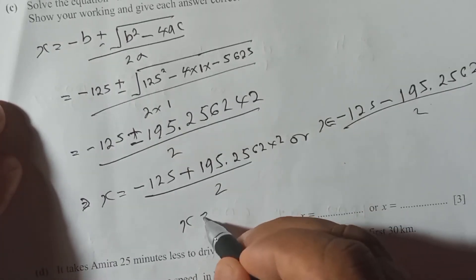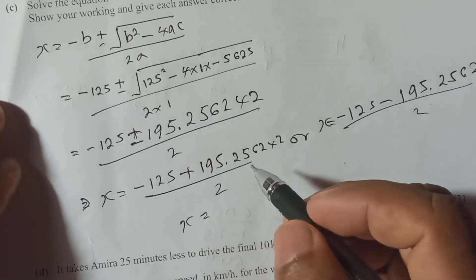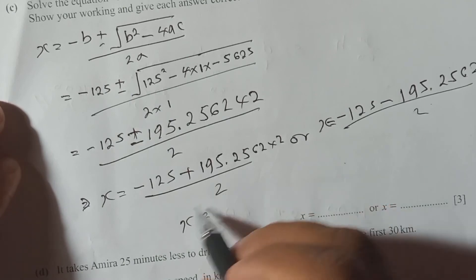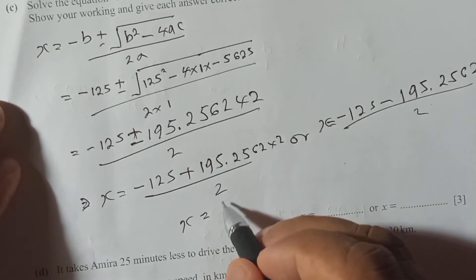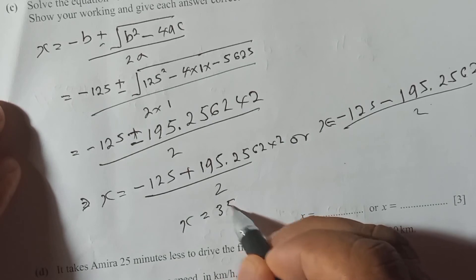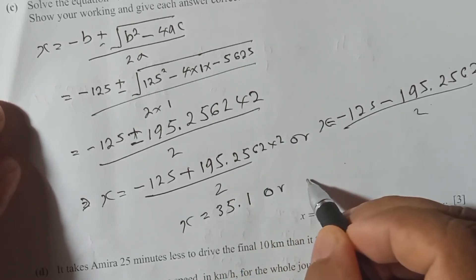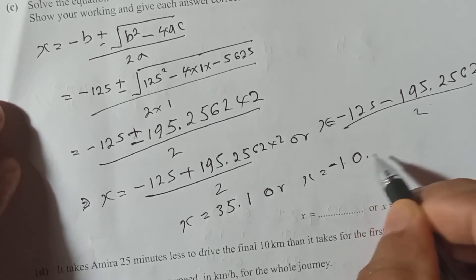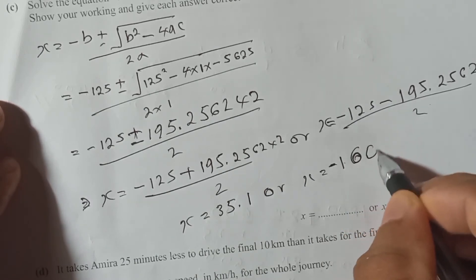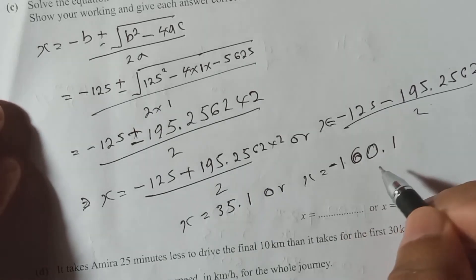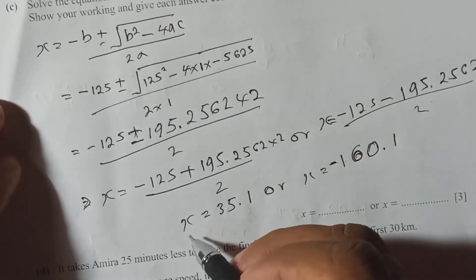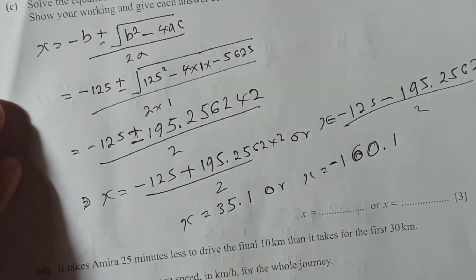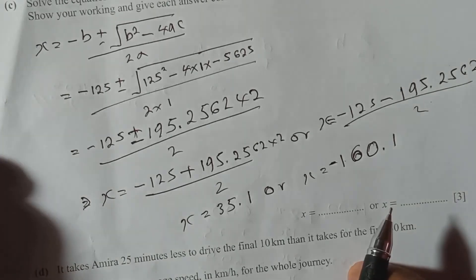You can write the answers directly after rounding. The two answers are x equals 35.1 and x equals minus 160.1. However, x represents time — the time Amira takes to travel the first 30 kilometers — so time cannot be negative.